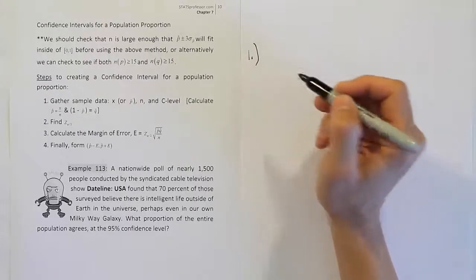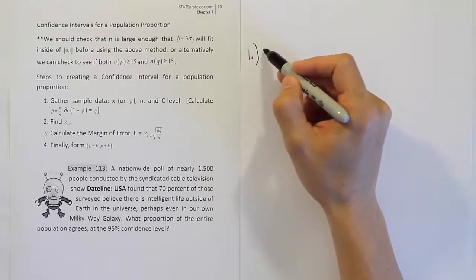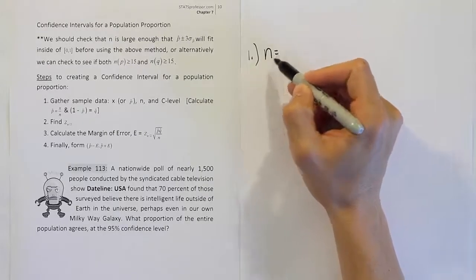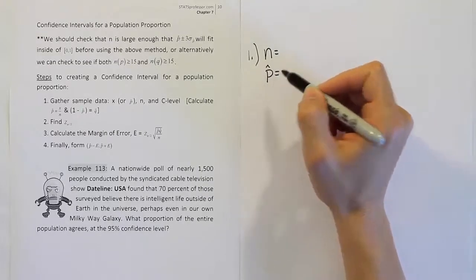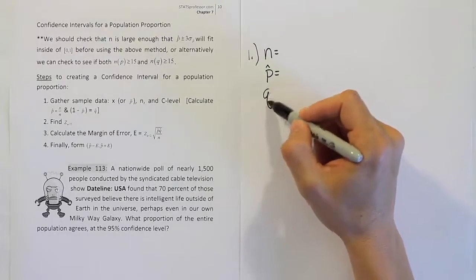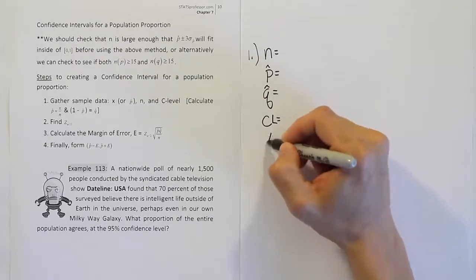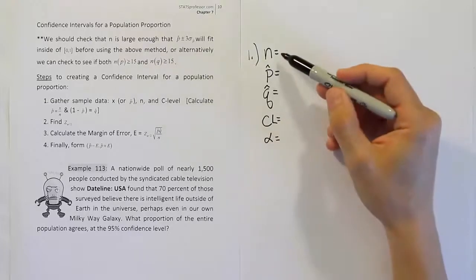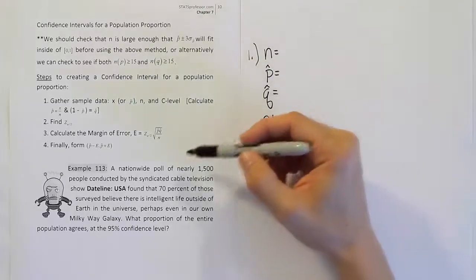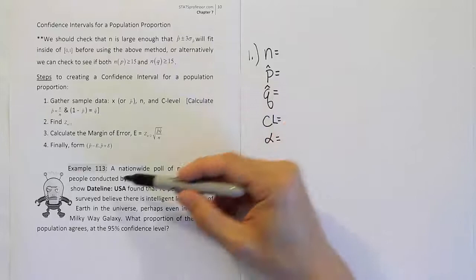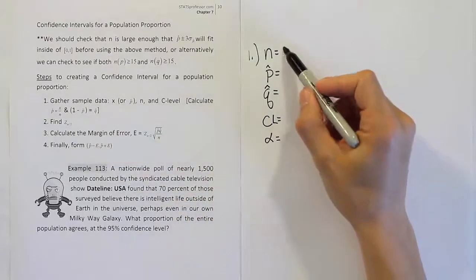So let's talk about step one. Step one is to just write down all the information. We generally want to have an n in the problem, a p-hat quantity, a q-hat quantity, a confidence level, and an alpha. n in the problem is 1,500 because 1,500 people were surveyed.